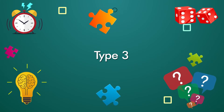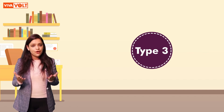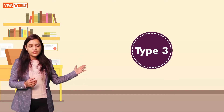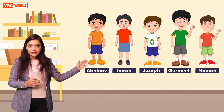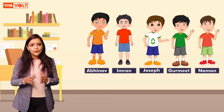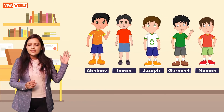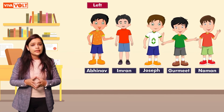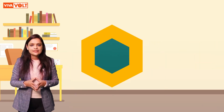Type 3. In this type of question, we need to identify the position or rank of an object or person with respect to the position of another object or person. Look at the series of boys: Abhinav, Imran, Joseph, Gurneet, Naman. We need to tell the position of the boy standing to the immediate right of Joseph. Considering the series starts from the left with Abhinav at the first position, the boy standing to the immediate right of Joseph is Gurneet.